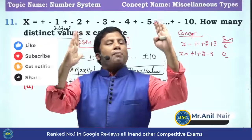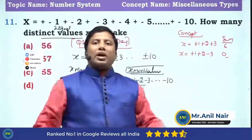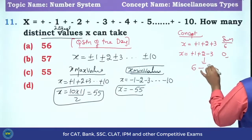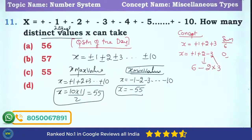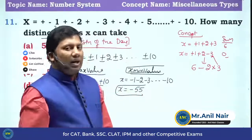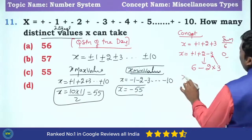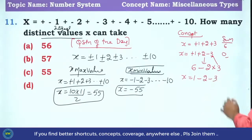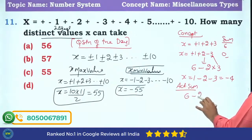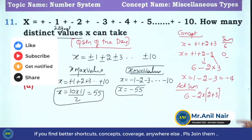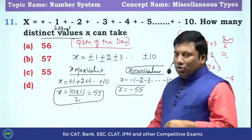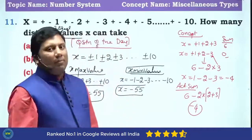In a number line, if a value is at A and I make it minus A, I am moving to the left-hand side by 2A units. If 3 is replaced with minus 3, the new sum equals the total sum when all are positive, minus 2 times the number whose sign is changed. If two numbers' signs are changed — say 1 − 2 − 3 = −4 — then it is 6 minus 2×(2+3) = 6 − 10 = −4. Because 2 became minus 2 (net effect: −2×2) and 3 became minus 3 (net effect: −2×3).